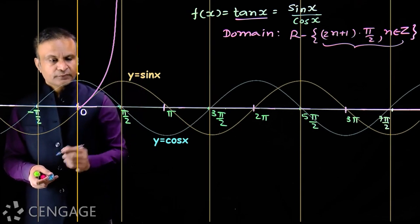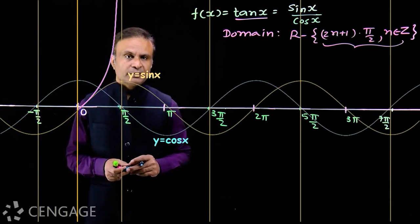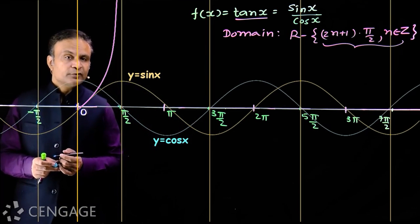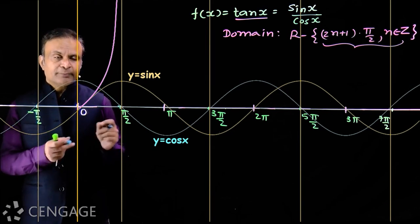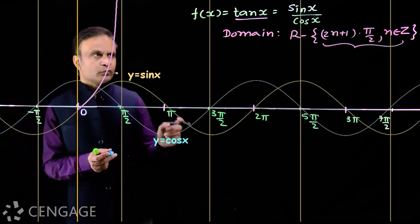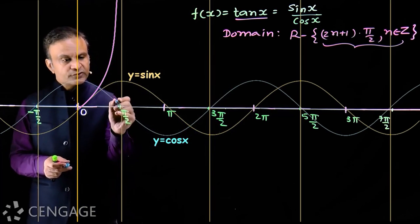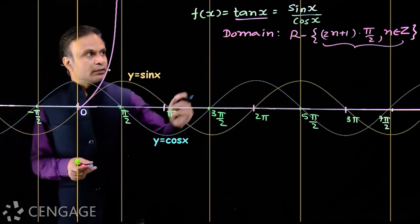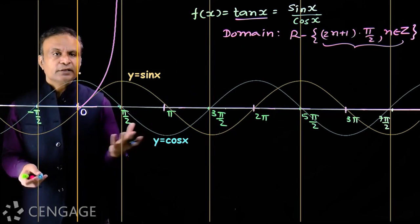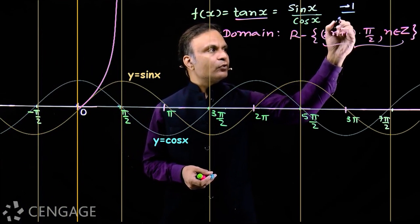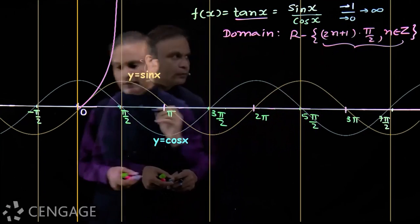The graph of tan x increases continuously in the first quadrant. When x approaches π/2, sin x approaches 1 and cos x approaches 0 from the positive side. So the ratio sin x / cos x approaches positive infinity. Therefore, as x tends to π/2, tan x approaches +∞.